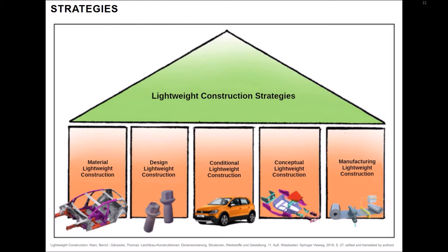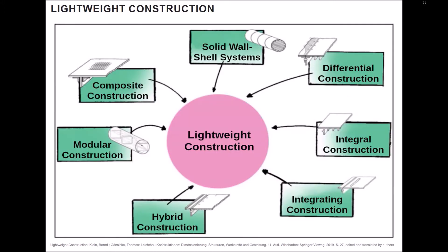It can happen that several strategies are used at the same time. This classification differentiates between different construction methods that can be used for the individual components of a building. Extensive knowledge in a wide variety of areas is necessary for the correct selection of a suitable construction. Different connection techniques, material properties, manufacturing processes, structural construction, maintenance and subsequent dismantling are just some of the influencing factors to be considered.